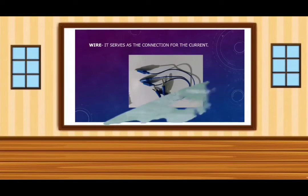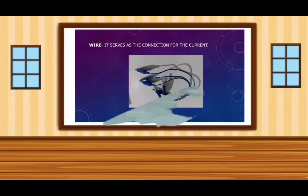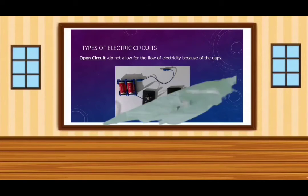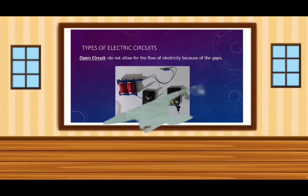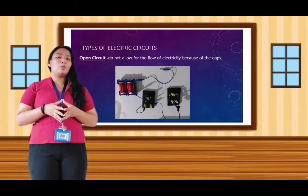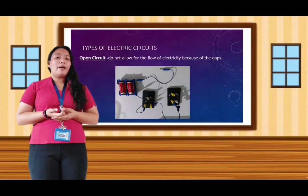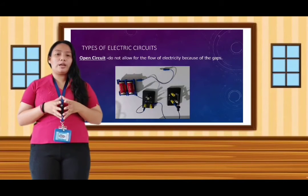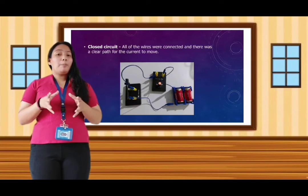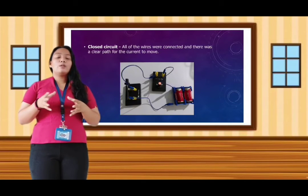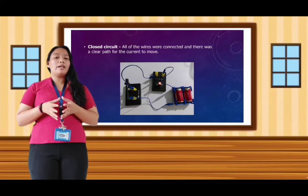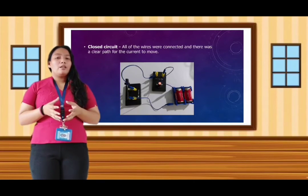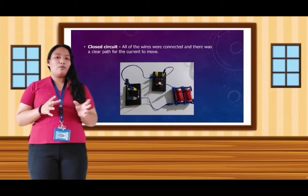Let us now look at the types of electric circuits. I have two here: the open circuit and the closed circuit. An open circuit does not allow for the flow of electricity because of a gap. This is what you experienced in the activity — when you connected the wire but there was no complete connection, there was a gap. The closed circuit has all wires connected, providing a clear path for the current to move. Unlike the open circuit, the closed circuit allows current to flow, making things like the bulb function and light up.